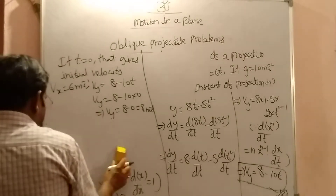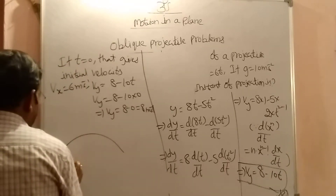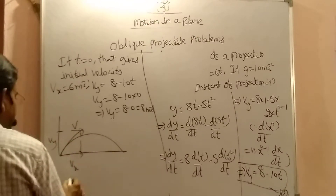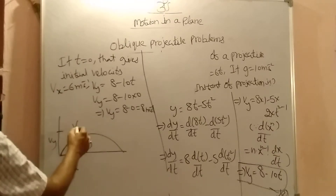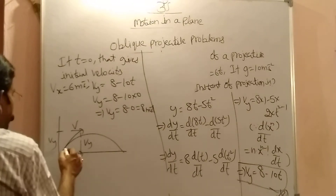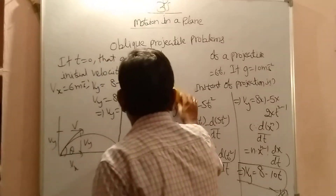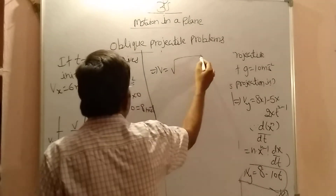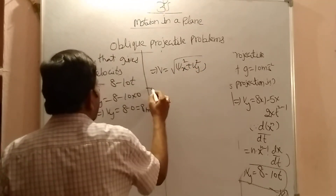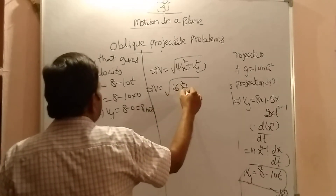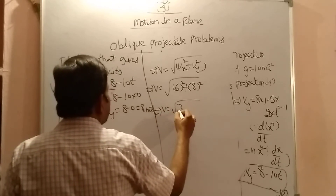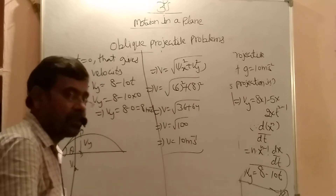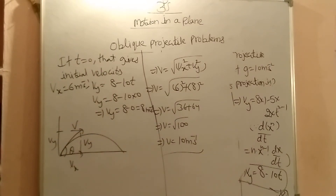Now finding the initial velocity magnitude. The velocity components vx and vy are perpendicular, so by the vector formula: v = √(vx² + vy²). Here v = √(6² + 8²) = √(36 + 64) = √100 = 10 m/s. So the initial velocity of the projectile from the given data is 10 m/s.